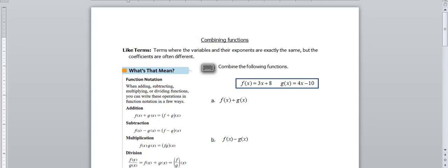The first thing I want you to notice is a phrase called like terms. I'm going to be referring to that quite often today and in the future. Like terms is when the variables and their exponents are exactly the same, so they have the same degree, but the coefficients are often different.